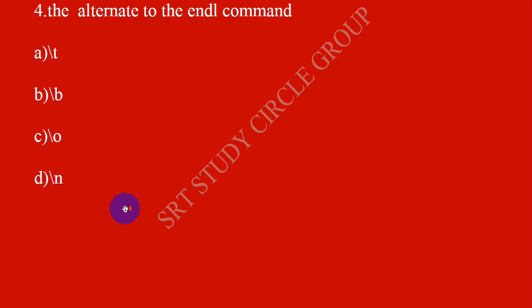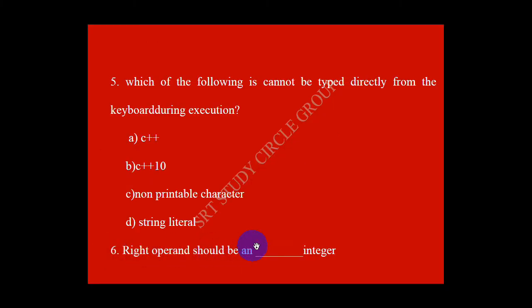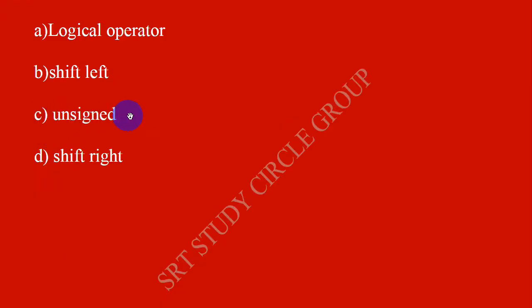Slash n means new line. Which of the following cannot be typed directly from the keyboard during execution? The answer is non-printable character. C unsigned integer. The answer is A, non-printable character.